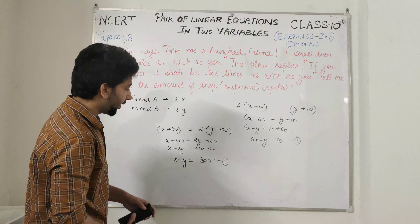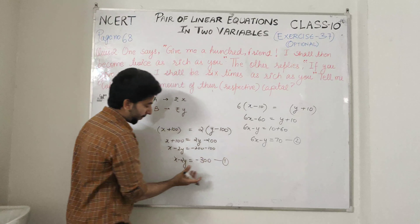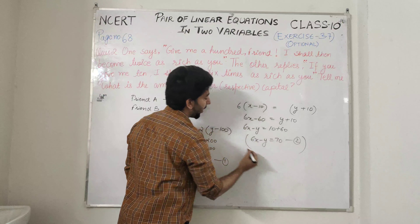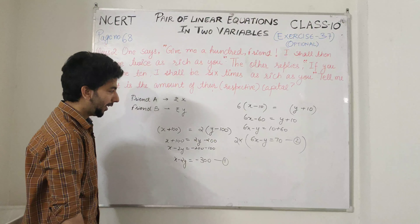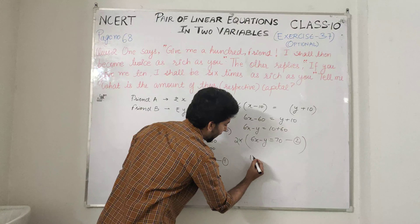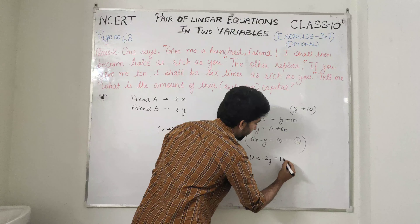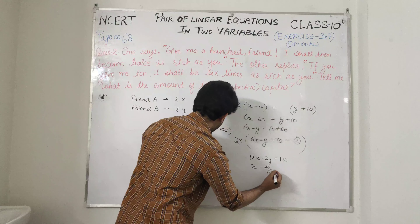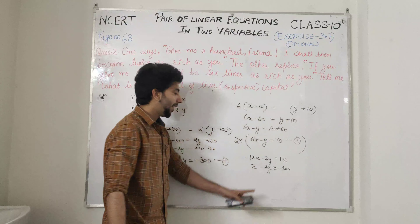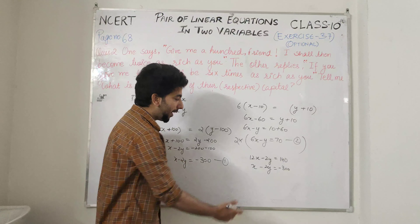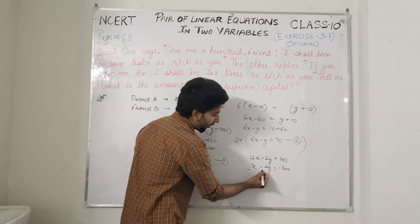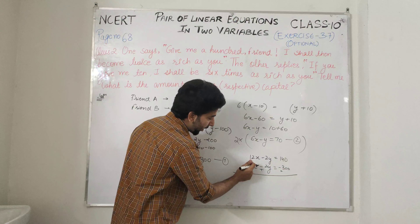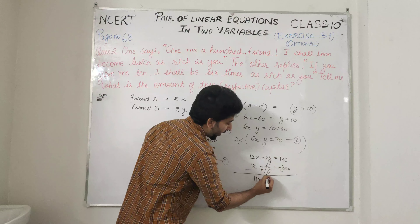तो हम इसको solve करते हैं elimination method का use करते हैं. Y के coefficient को same करते हैं — इसमें 2 है और यहाँ 1 है, तो second equation को multiply by 2 करते हैं और first equation के साथ रखते हैं: X minus 2Y = minus 300. Sign different के लिए subtract करते हैं नीचे वाली equation को, sign change करते हैं: 12X minus X = 11X, Y eliminate हो गया.